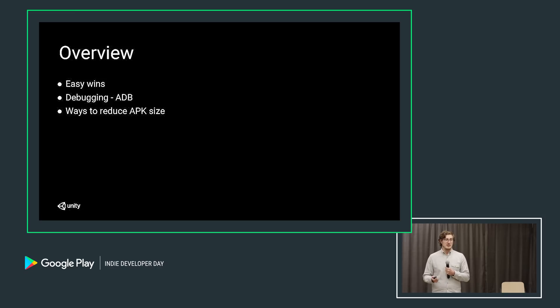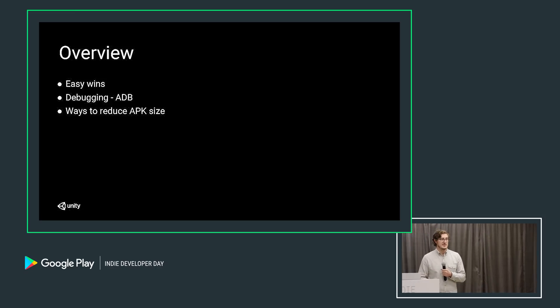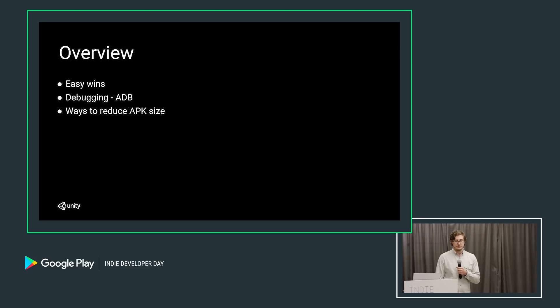Next I'm going to talk about ADB, the Android Debug Bridge — how you can set that up and utilize it to get information about what's actually happening with your application running on Android back to your PC. And after that, I'm going to talk about reducing the APK size on your application so that you can make it easier for users to get your app, try it right away, and not have to wait for a long download or downloading over Wi-Fi.